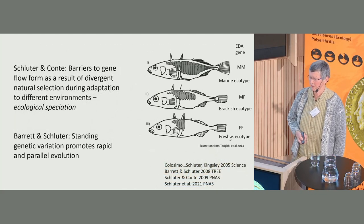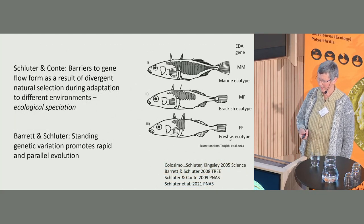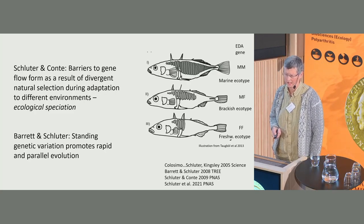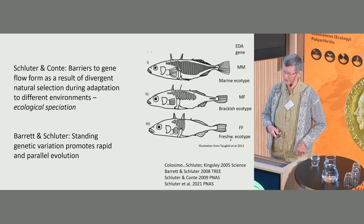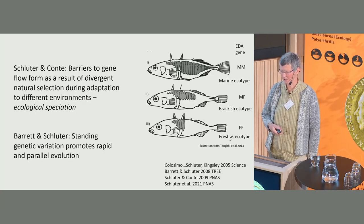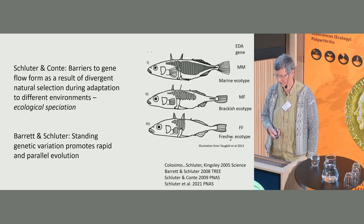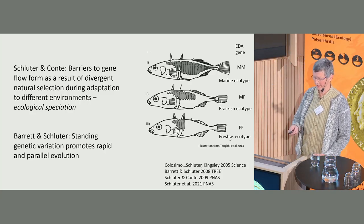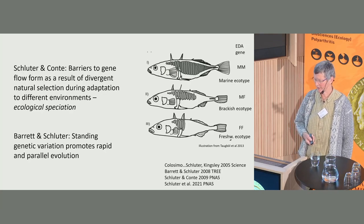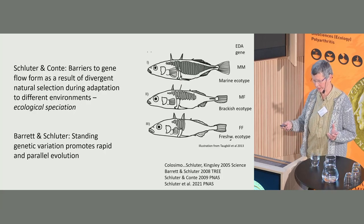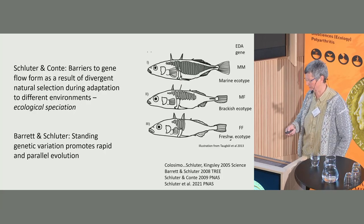To really understand from where comes the genetic variation and how this variation can be structured is also inspired by much of the work done in the stickleback system. The background for ecological speciation and the understanding of the role of standing genetic variation is very general — you can learn from this system.